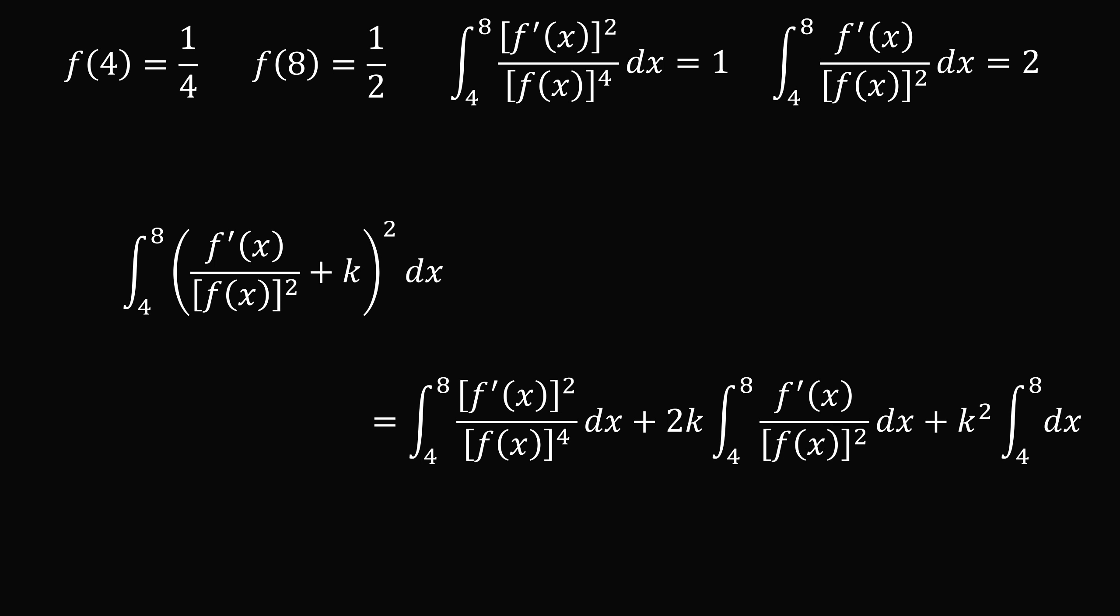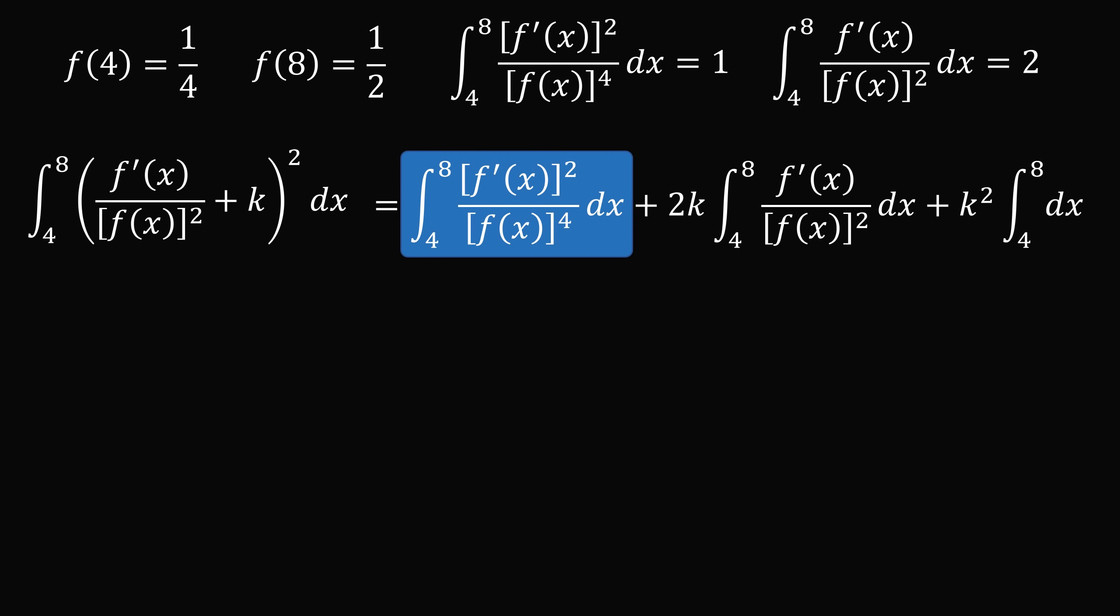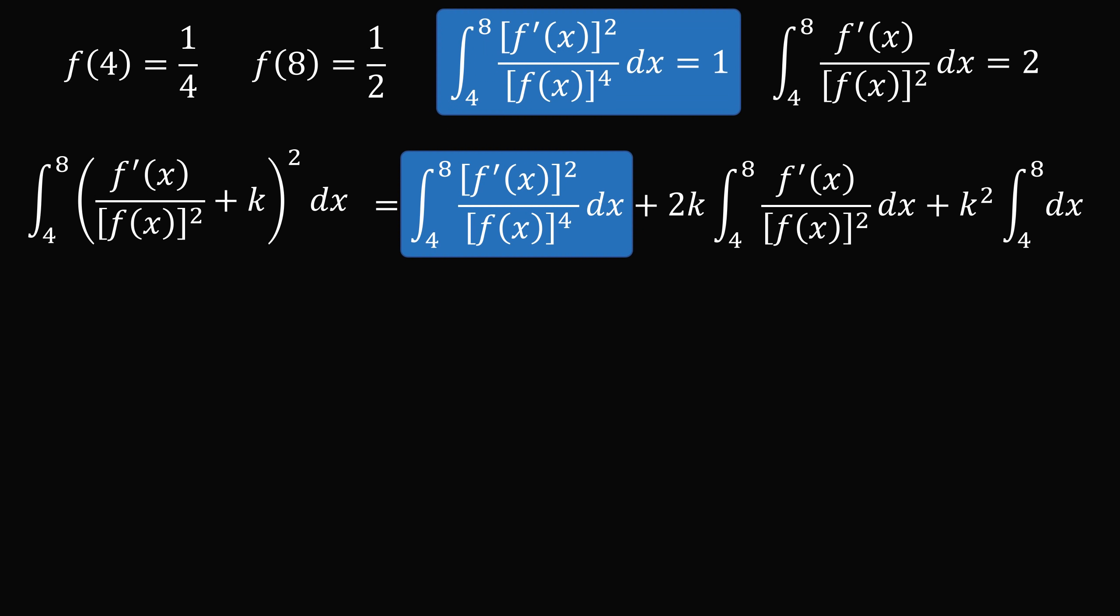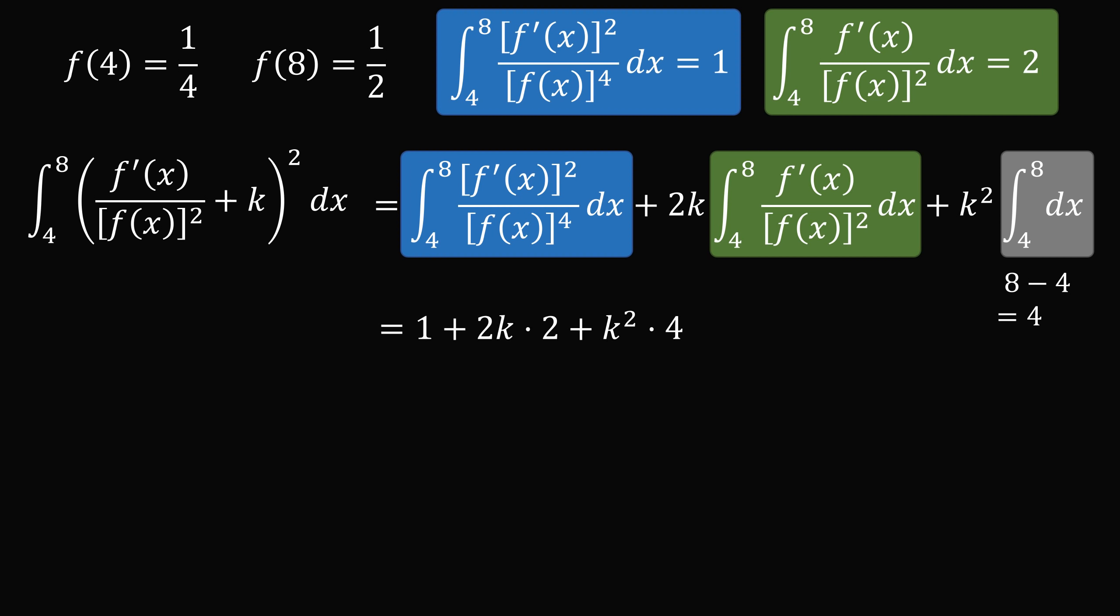Now, let's compute these three integrals. We are given the value of the first integral, that's equal to 1. We just computed the value of the second integral, that's equal to 2. The value of the third integral is equal to 8 minus 4, which is equal to 4. So we'll substitute in, and then we'll simplify. 1 plus 4k plus 4k² is exactly equal to the square of 2k plus 1.